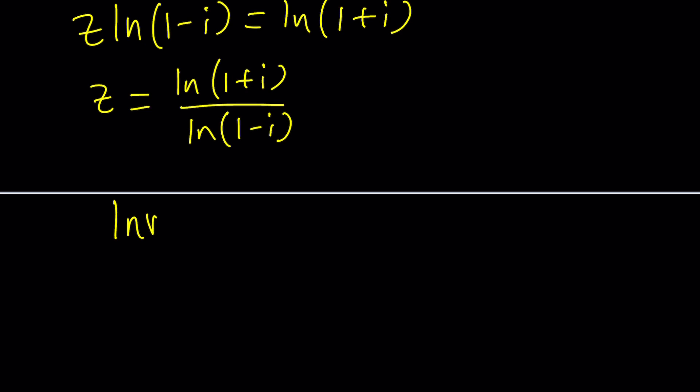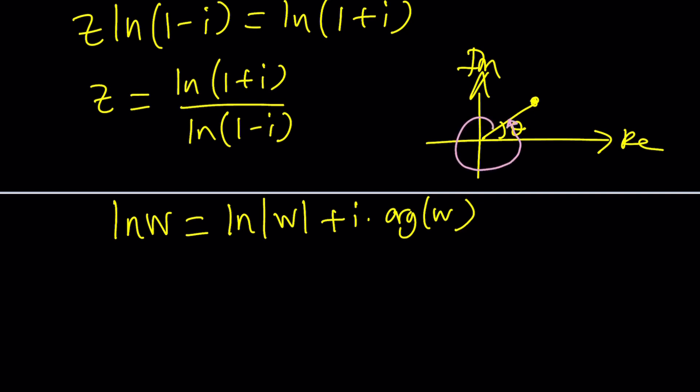Like let's say w is a complex number. ln w would be the ln of the absolute value of w plus i times the argument of w. Of course, we're talking about several arguments here because if you consider a complex number in the argand plane, this is the imaginary, this is the real, it's going to make an angle theta. But of course, you're allowed to add multiples of 2 pi to it.